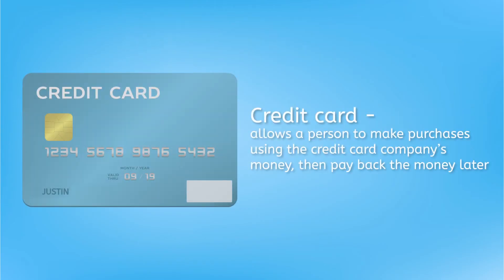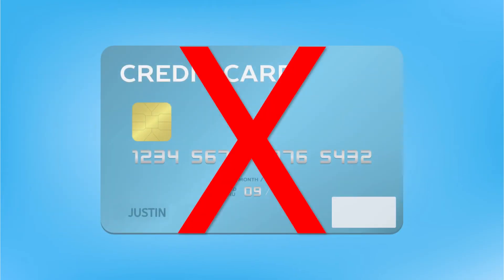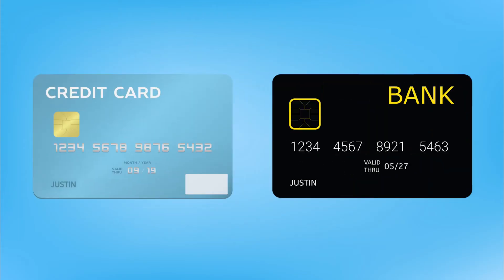With credit cards, you pay using the issuer's money, which you are then responsible for paying back to them later. Using a credit card is just like taking out a small loan. And if you don't pay the money back, you might not be able to take out big loans when you need them. People often confuse debit cards and credit cards, but they're two very different things: debit cards transfer your money right then, while credit cards transfer the issuer's money and then you have to pay it back later.